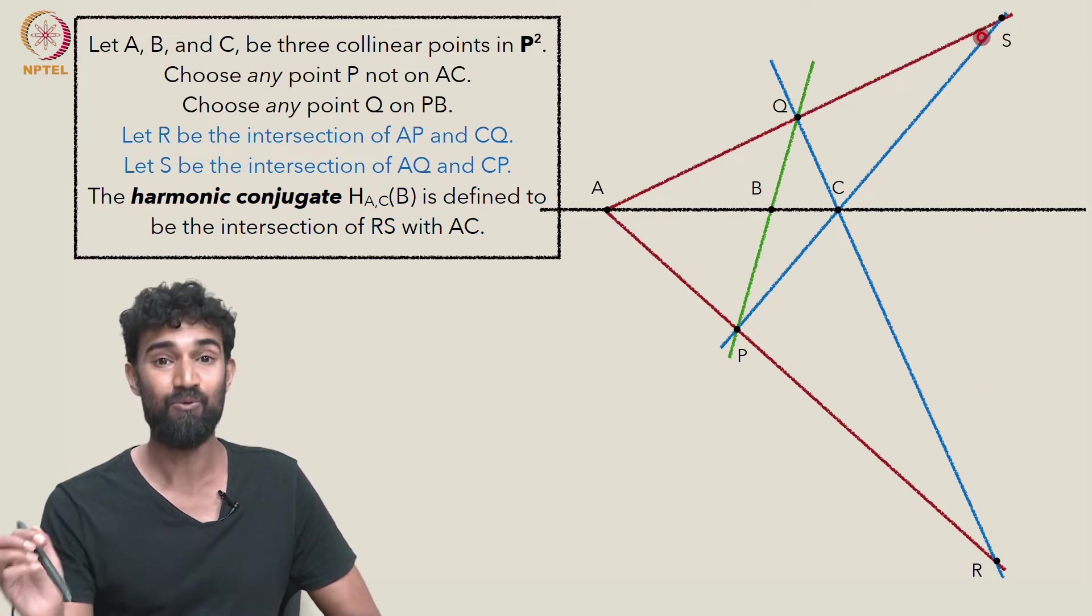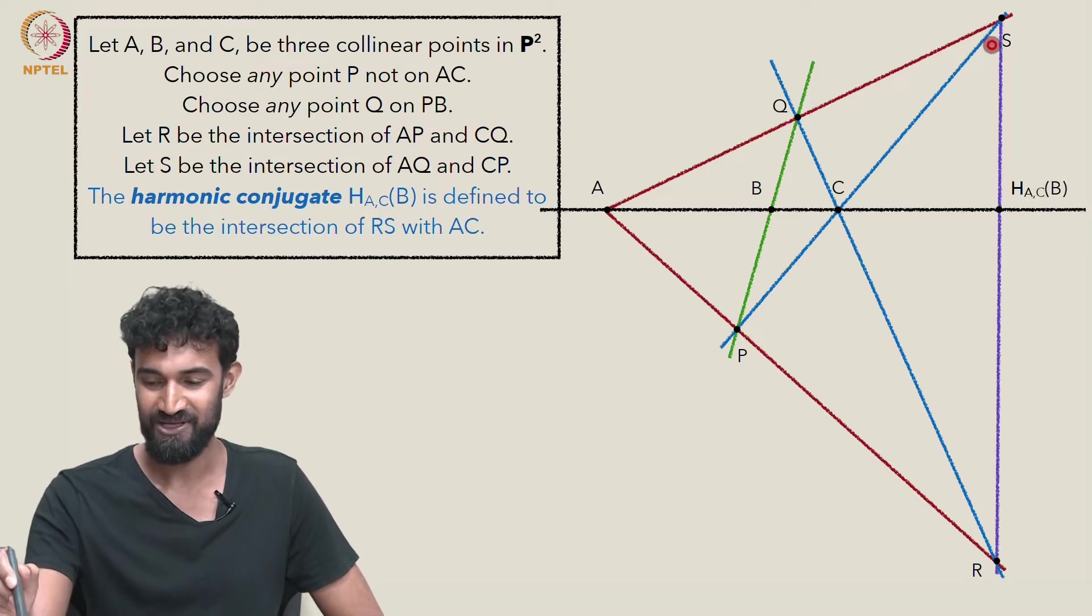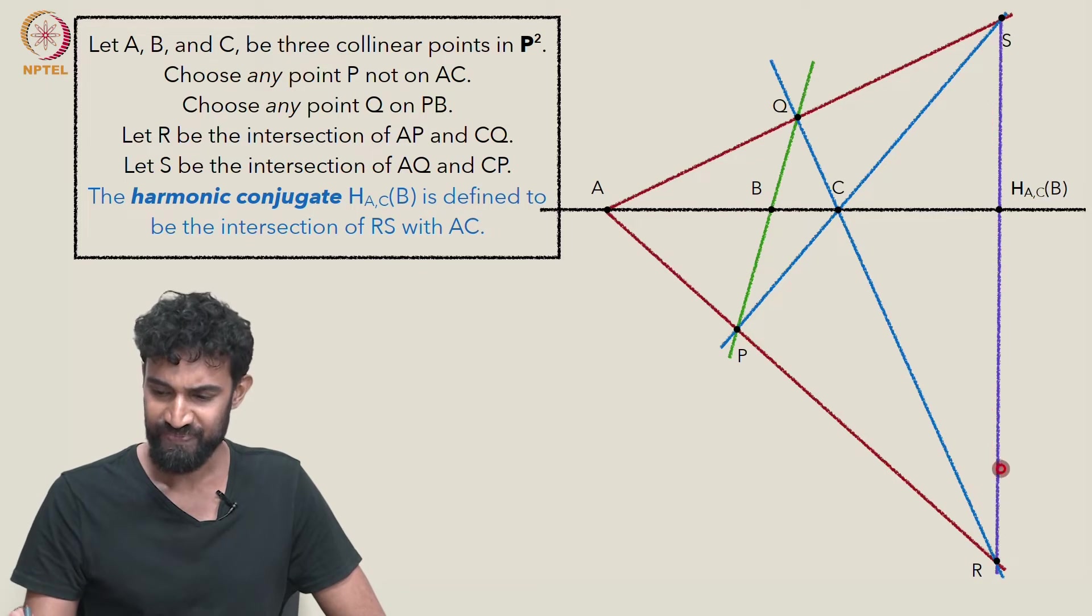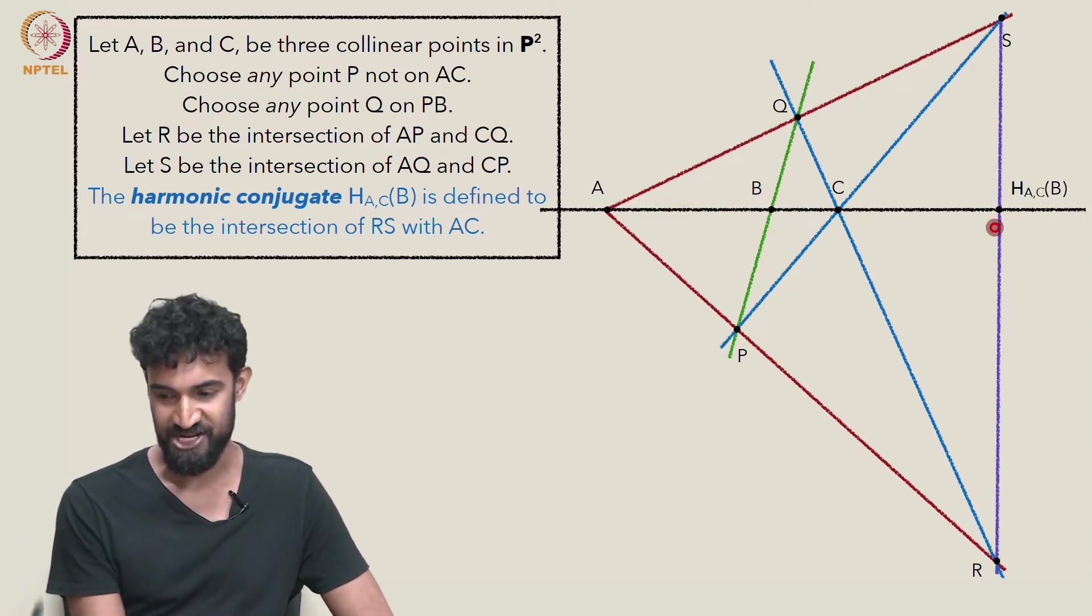So when we connect them up, we get what used to be our diagonal of the quadrilateral. Now, it doesn't look like a diagonal, but we get this line here. And that's going to hit our original line at this point, HAC of B.